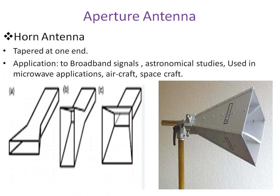Next is the aperture type antenna. If you see the diagrams here, at the mouth side there is some kind of aperture structure — that's why it is called an aperture antenna. The mouth or aperture will help to radiate or receive the radiation from the media or channel. One kind of aperture antenna is the horn antenna.